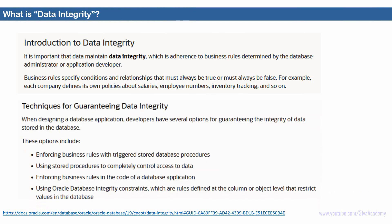Here are a few methods by which we can enforce the rules. The primary method is: whenever we are creating a database application, there will be some UI or user interface through which users key in the data and that data gets stored in the database. We can implement the validation in the UI layer itself — the application can validate whether the data is as expected, and then the validated data gets stored inside the database.